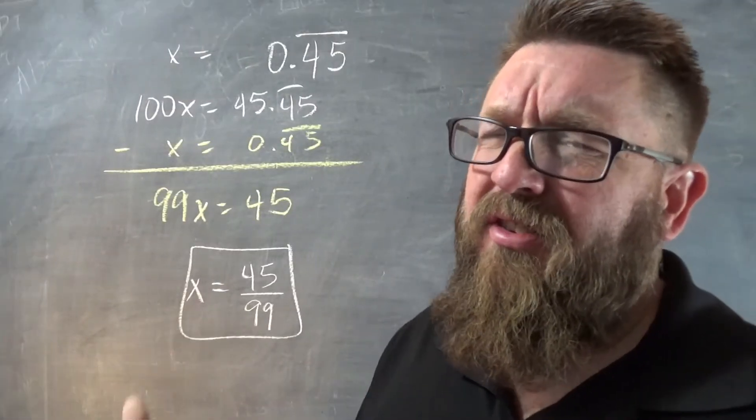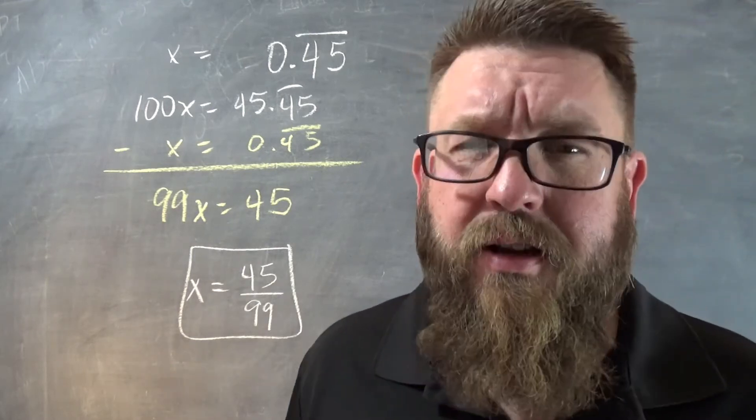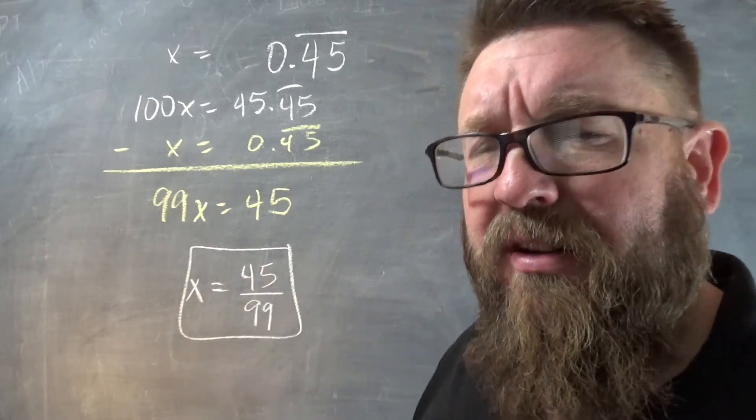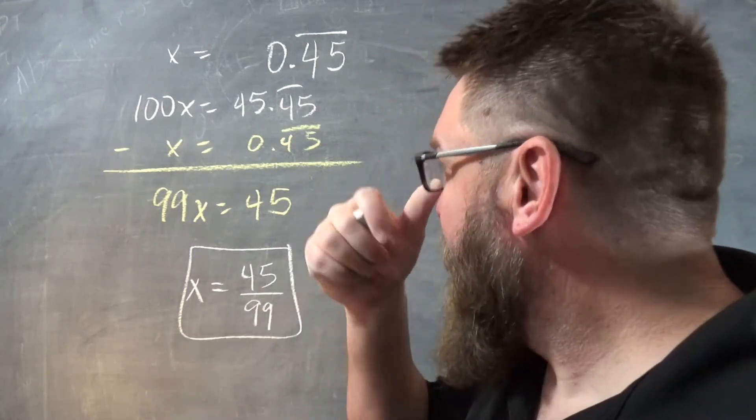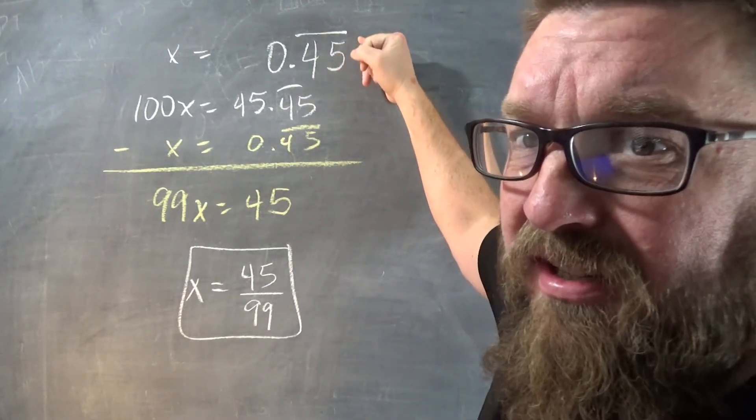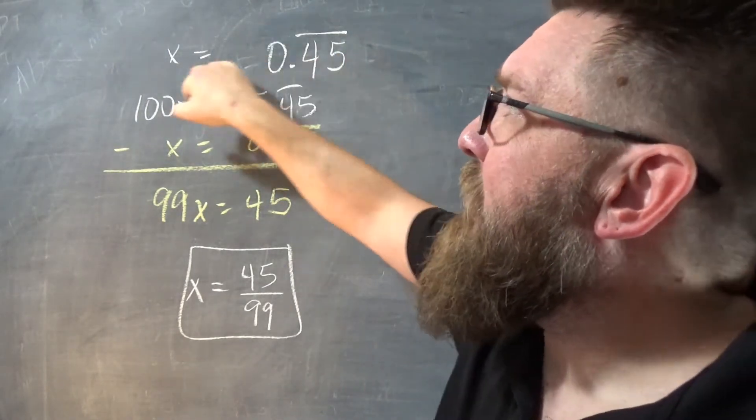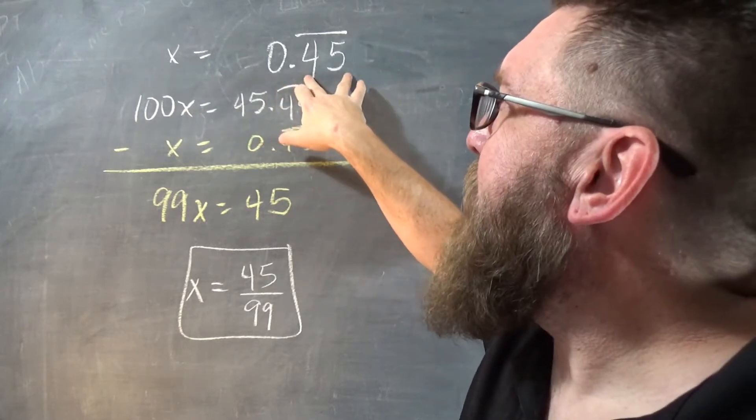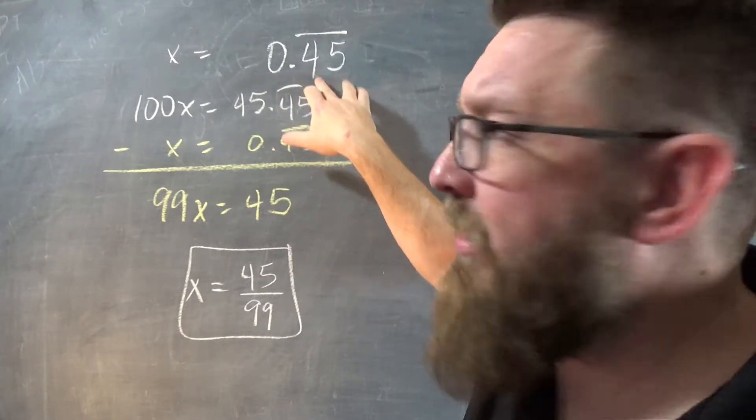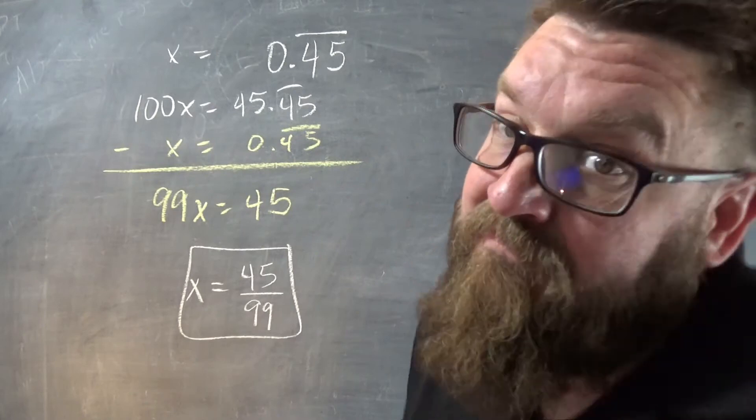Now, you might not understand the algebra behind that, kind of like systems of equations, but if you don't, it's okay. It works that way every time. The trick is, you just set up your first equation and then you multiply both sides of that equation by something so that you end up with your repeating decimal starting right there. That's it.